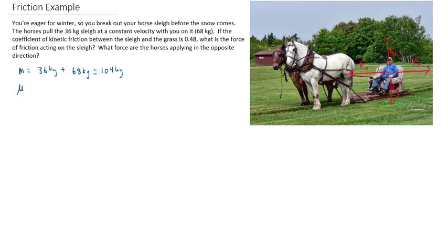The coefficient of kinetic friction is given as 0.48. Recall that coefficients of friction have no units—it's just a number. We're asked to figure out the force of friction acting on the sleigh and what force the horses are pulling in the opposite direction.